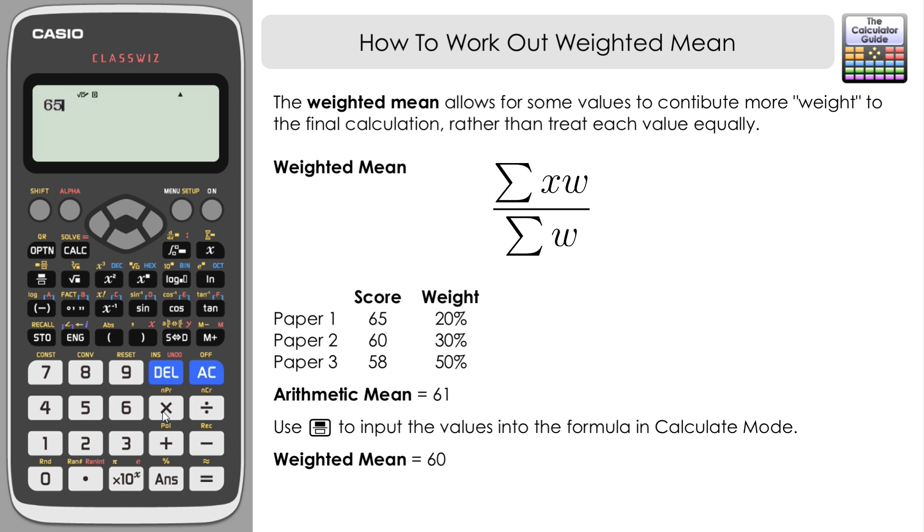Another way you could have done this is rather than use the percentages, use the decimal equivalents. So 65 multiplied by 0.2 plus 60 multiplied by 0.3 plus 58 multiplied by 0.5, and you could just press equals and get your weighted mean straight away. The reason why that works is that as a decimal equivalent, 100 percent is just one, the whole entire value, so it would be over one. We don't need to divide by one, so we can just get that result by using the decimal equivalents of the weights.